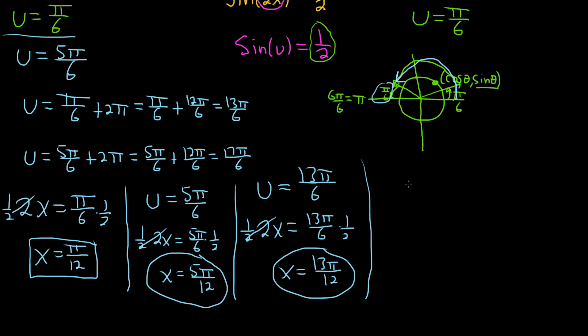Then one more. u equals 17π over 6. And again, u is equal to 2x. So 2x is equal to 17π over 6. Then you multiply by 1 half. Multiply by 1 half. x is equal to 17π over 12. And those would be all four answers. I hope this video has been helpful.